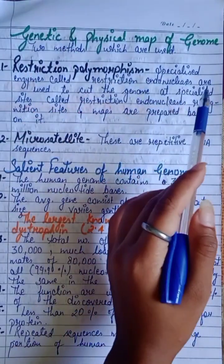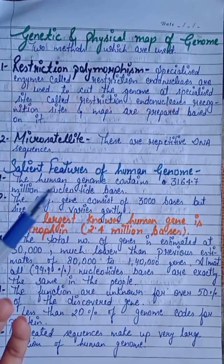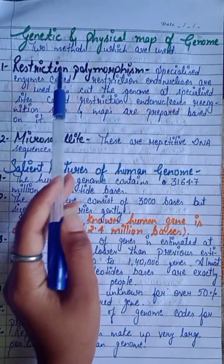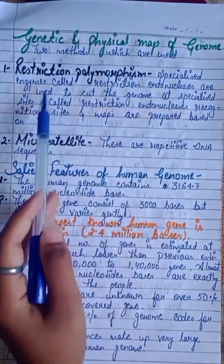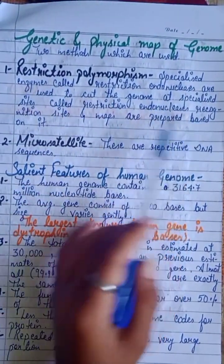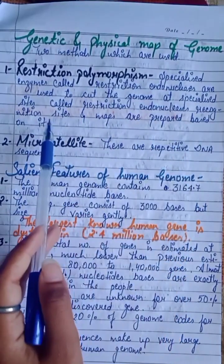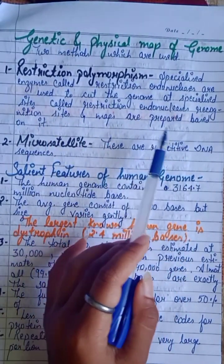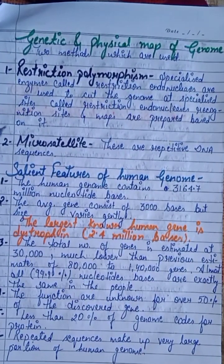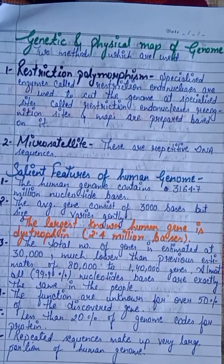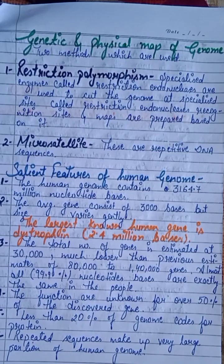Genetic and Physical Map of Genome — there are two methods used for genome sequencing. First, Restriction Polymorphism: specialized enzymes called Restriction Endonucleases are used to cut the genome at specialized sites called Restriction Endonuclease recognition sites, and maps are prepared based on this. Second, Micro Satellites, which are repetitive DNA sequences.